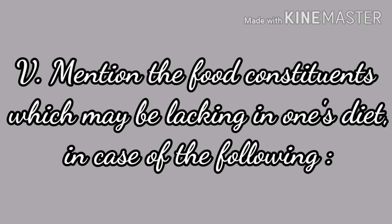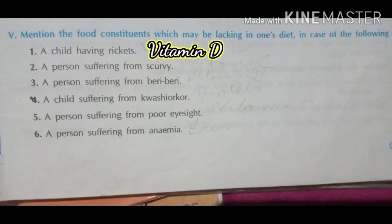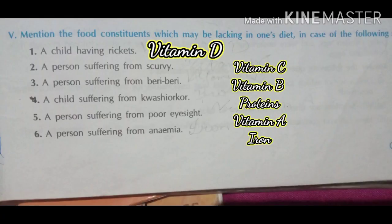Question number five: mention the food constituents which may be lacking in one's diet in case of the following. First: child having rickets — Vitamin D. Second: a person suffering from scurvy — Vitamin C. Third: a person suffering from beriberi — Vitamin B.